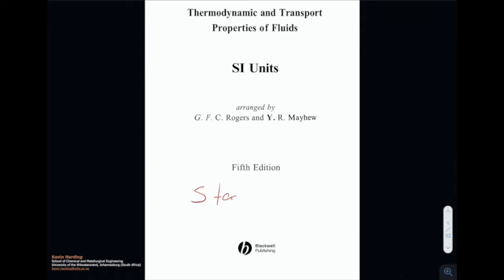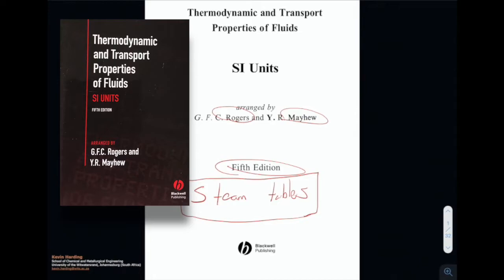What I want to look at today are the steam tables — steam, because this is related to water, not stream with an R. The version I'm looking at is the Rogers and Mayhew 5th edition, a brown book with a red line on the front. It's a soft cover book of about 32 pages called the Thermodynamic and Transport Properties of Fluids, so it has steam tables at the front as well as some other information at the back.